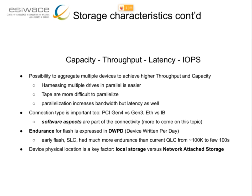For flash, there is an additional metric named DWPD — device writes per day — which characterizes the endurance of a flash device. The first generation of flash hitting the market was SLC, single-level cell, and it was extremely durable. The flash we can buy nowadays has more capacity and more throughput; however, the technology is QLC — quad-level cell — and the endurance is no longer hundreds of thousands of cycles. We have lost three orders of magnitude in terms of flash endurance. The key question is how many times we are planning to write the device during the lifetime of the system.